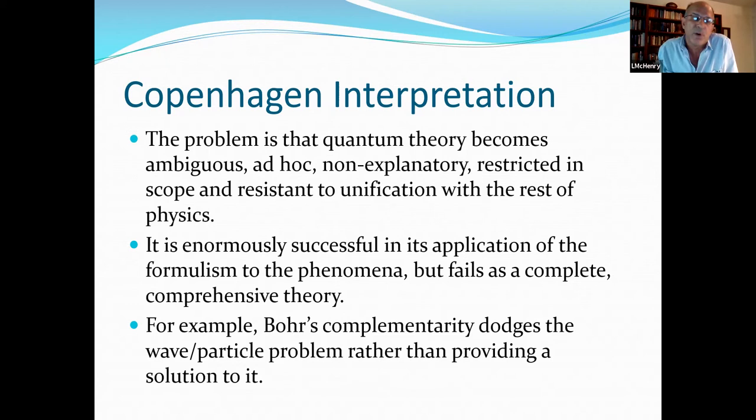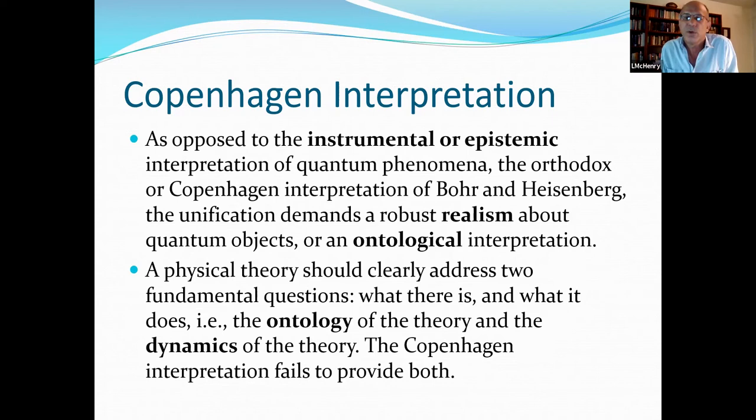It's enormously successful in its application of the formalism to the phenomenon, but it fails as a complete comprehensive theory. For example, Bohr's complementarity dodges the wave particle problem rather than providing a solution to it. So, as opposed to the instrumentalist or the epistemic interpretation of quantum phenomena, the orthodox or the Copenhagen interpretation of Bohr and Heisenberg, the unification demands a robust realism about quantum objects, that is to say, an ontological interpretation. Physical theory should clearly address two fundamental questions, what there is and what it does. That is to say, the ontology of the theory and the dynamics of the theory, and the Copenhagen interpretation fails to provide both.